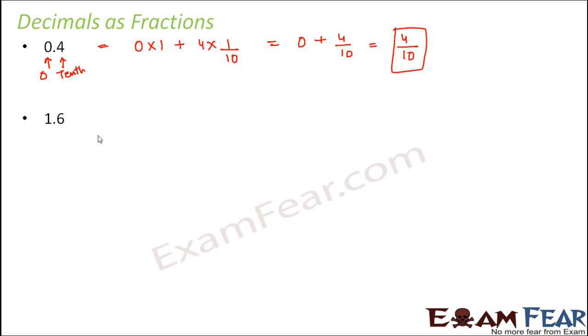Let's look at one more example: 1.6. Here 1 is at the ones place and 6 is at the tenths place. So we can write it as 1 × 1 + 6 × 1/10. This can be written as 1 + 6/10. This is like addition of fractions, which we learned in the previous lesson.